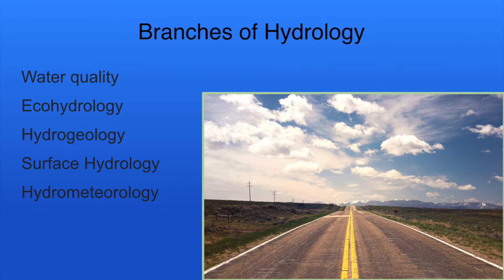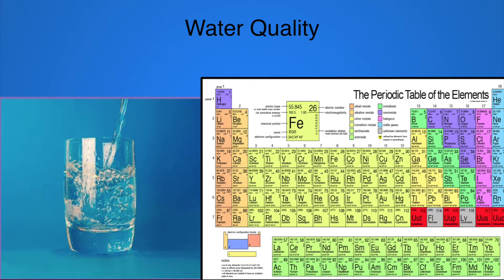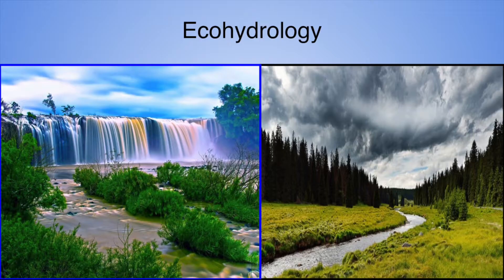Water quality, ecohydrology, hydrogeology, surface hydrology, and hydrometeorology are some of the various branches in the study of water. Water quality includes water chemistry and pollutants in water bodies. Lakes, rivers, groundwater, and the oceans all have different pH levels, dissolved ions, and various levels of pollution.